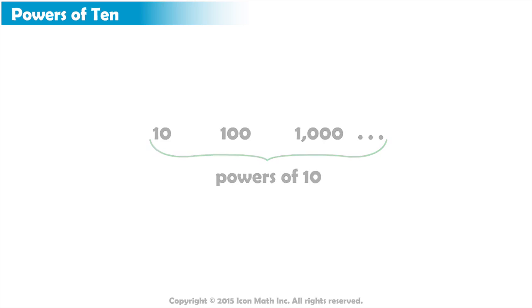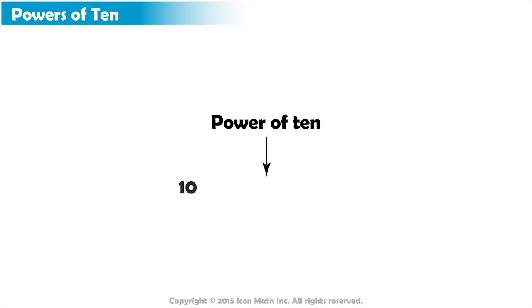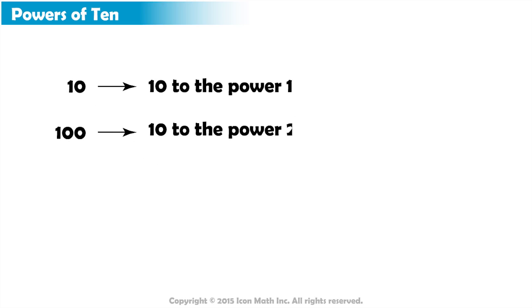Another way to describe a power of 10 is to say that it is the value we get when we multiply 10 by itself a number of times. So 10 is actually 10 to the power 1, and 100 is 10 to the power 2 or 10 times 10, which is 10 multiplied by itself 2 times. And 1000 is 10 to the power 3 or 10 times 10 times 10, which is 10 multiplied by itself 3 times.